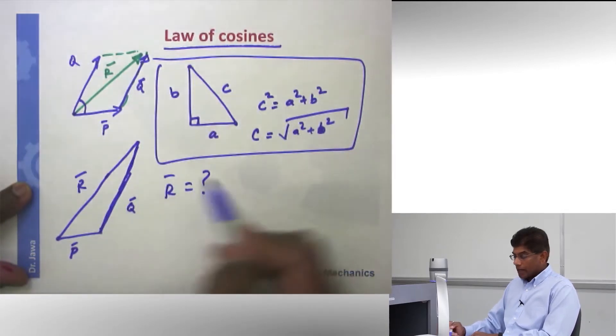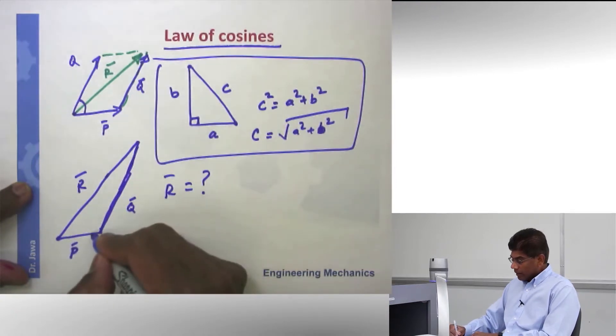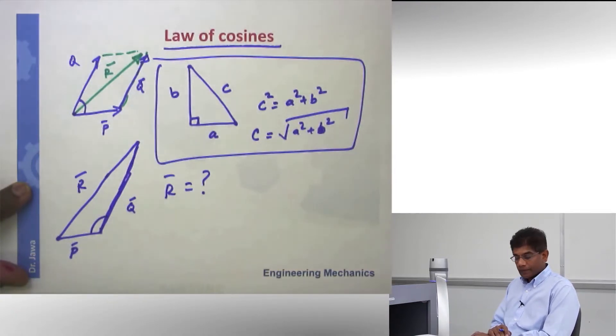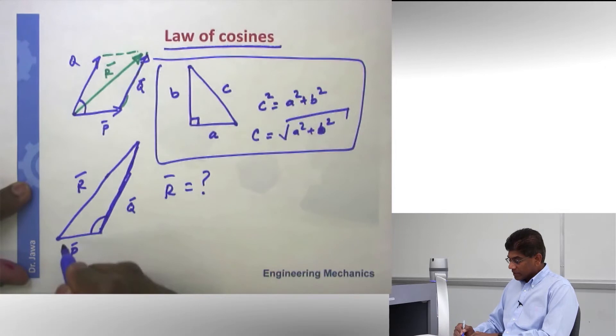Now, if it is a Pythagorean triangle, you know how to do it. It is not a Pythagorean triangle. This angle is not 90 degrees. So what we will do is use what is known as law of cosines. What is law of cosines?